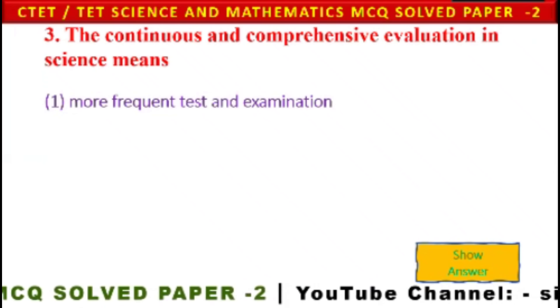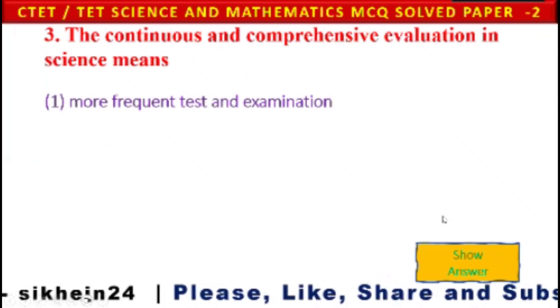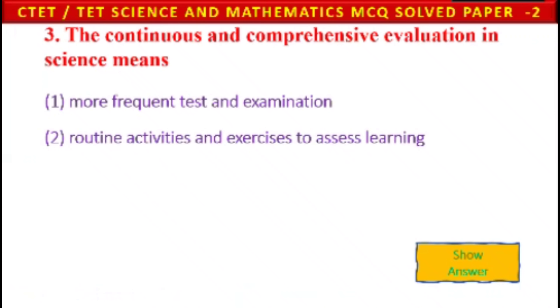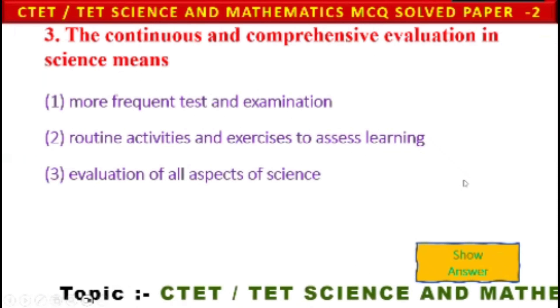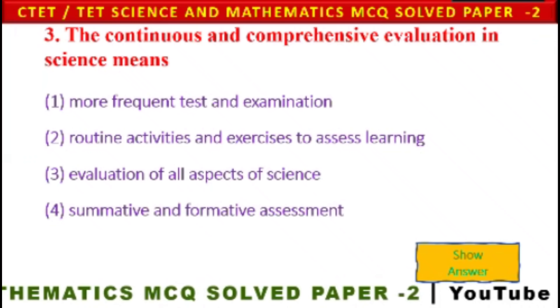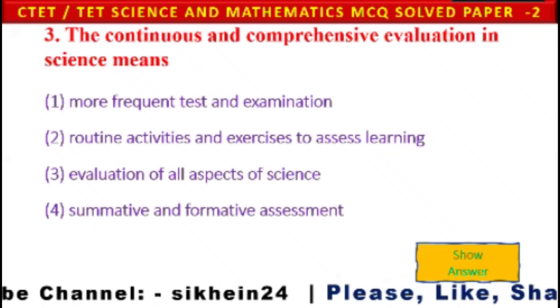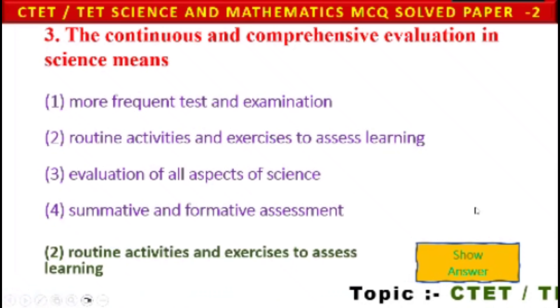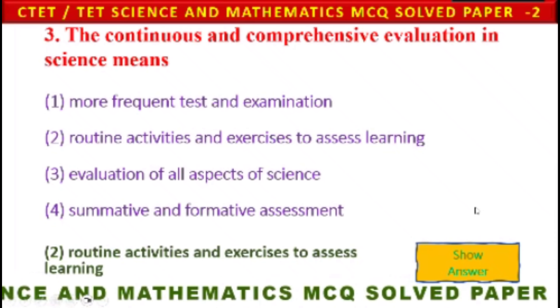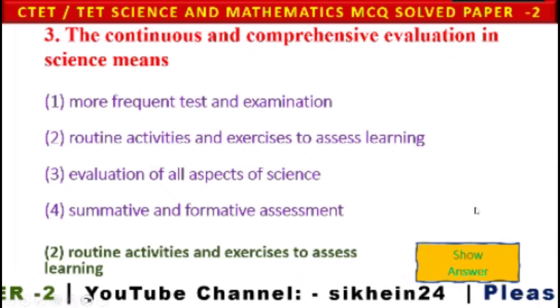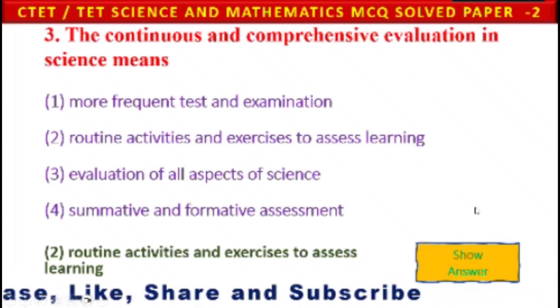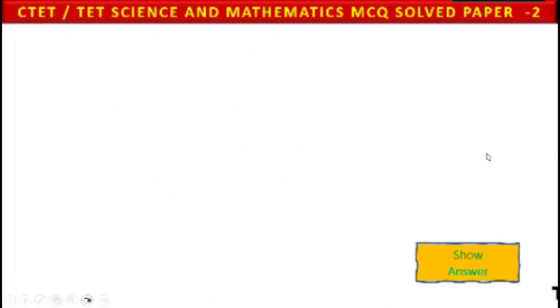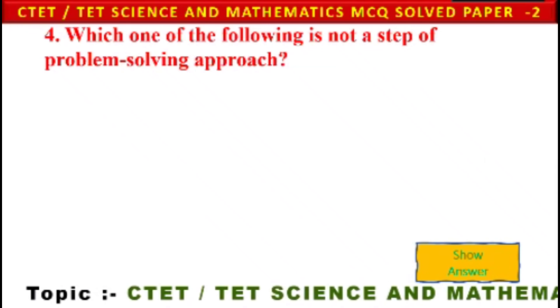Next question: Continuous and Comprehensive Evaluation (CCE) in science means — 1) more frequent tests and examinations, 2) routine activities and exercises to assess learning, 3) evaluation of all aspects of science, 4) summative and formative assessment. Option 2 is the appropriate answer — routine activities and exercises to assess learning.